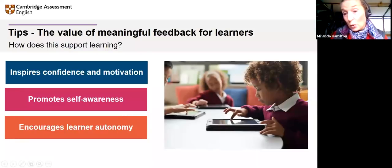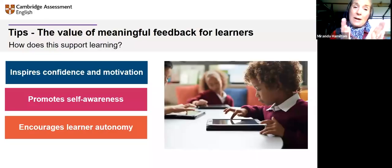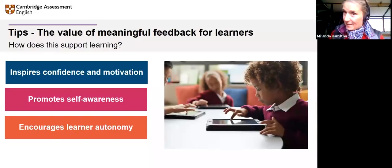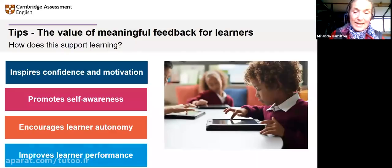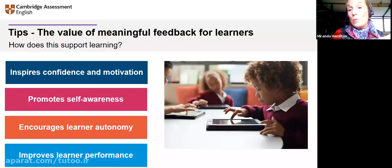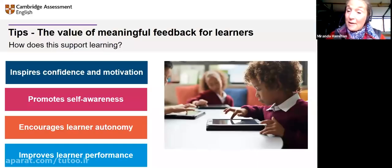It encourages learner autonomy — this is really helpful because learner autonomy is about lifelong learning. It starts as soon as our learners go into the classroom, whatever age they are. We need to encourage them to become reflective learners and take ownership of their learning. And of course, meaningful feedback will improve learner performance by encouraging a feeling of progression. As many of you mentioned with portfolios, learners can look at a piece of writing from week one and compare with their feedback from week six, week eight, and later on — they can see their progress.